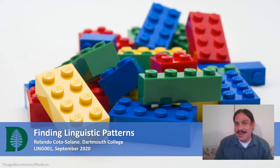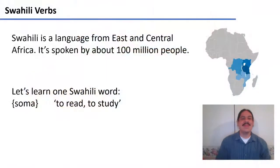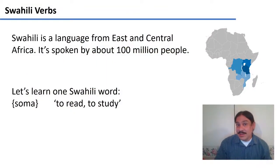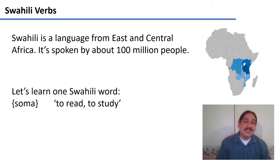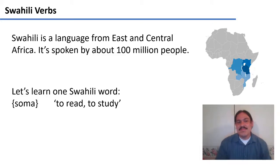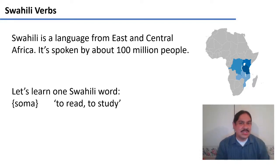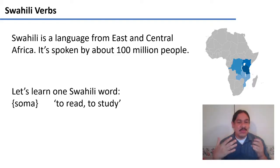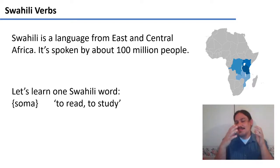Let's show that with a little exercise. Let's work with Swahili. Swahili is a language from East and Central Africa. It is mostly spoken in Tanzania and Kenya and it's spoken by about a hundred million people. Maybe you've studied Swahili, maybe you haven't — we look at it a lot in this class. Let's learn one Swahili word: soma, which means to read or to study. Let's take that one word and try to see if it helps us figure out what other Swahili words mean and what their structure is.